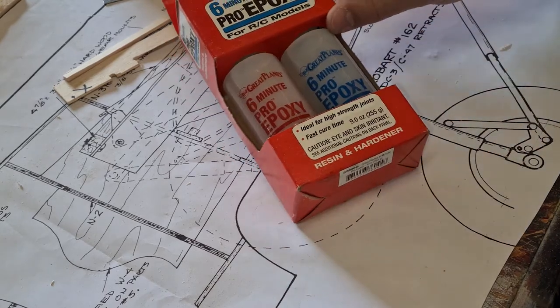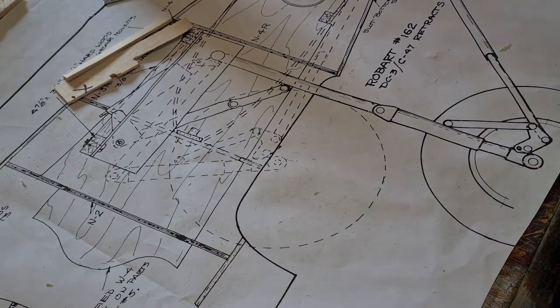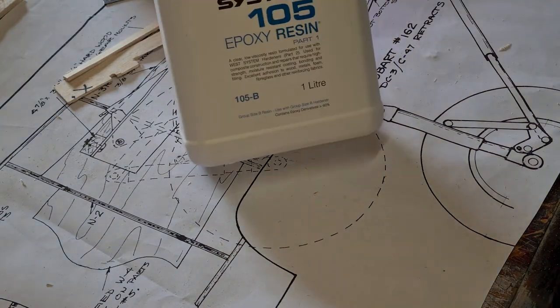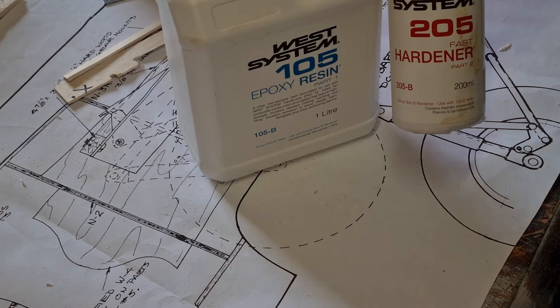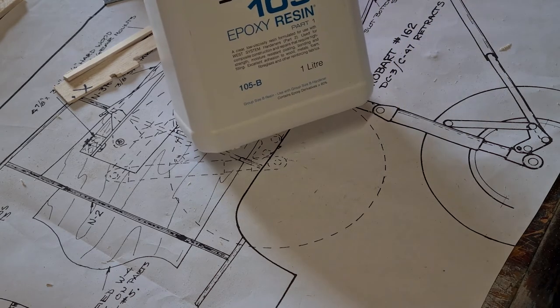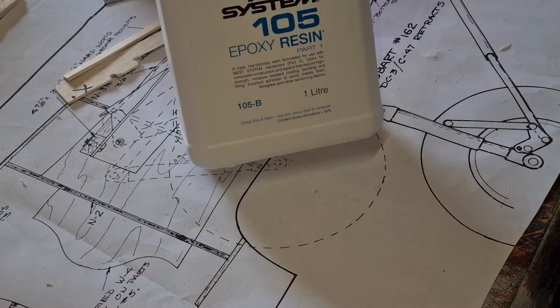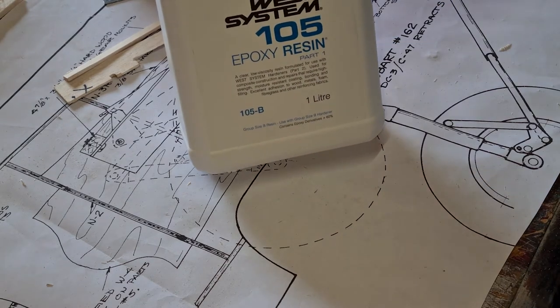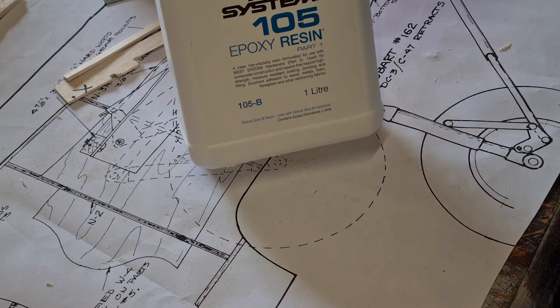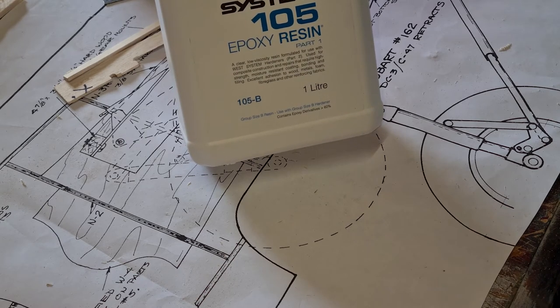But when I need an even higher strength joint, I'll use my epoxy. So I'll use this with a fast hardener, and this stuff takes, you know, 10-12 hours to sort of set. But in terms of my DC-3, for example, this stuff I've used throughout the landing gear area, the engine nacelles area—that sort of thing. Where a really high strength is needed, and it's usually a combination of hardwoods and balsa and sheeting. There's a lot going on in those areas.